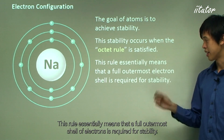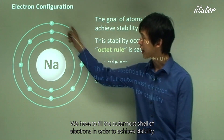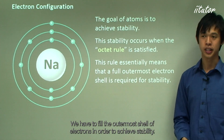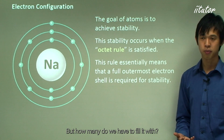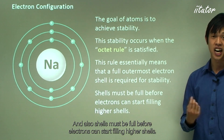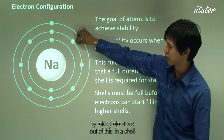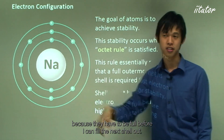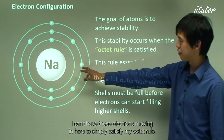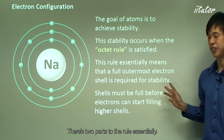The octet rule essentially means that a full outermost shell of electrons is required for stability — we have to fill the outermost shell of electrons. Additionally, shells must be full before electrons can start filling higher shells. You can't move electrons from an inner shell outward just to satisfy the octet rule.